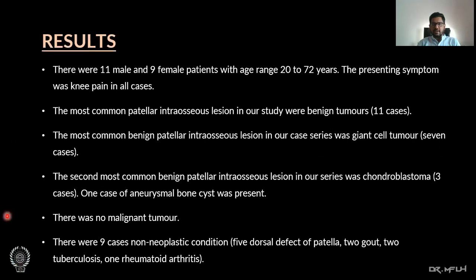There were 11 male and 9 female patients with an age range of 20 to 72 years. The presenting symptom was majorly knee pain. The most common patella intraosseous lesions in this study were benign tumours, accounting for 11 cases. The most common benign patella intraosseous lesion was Giant Cell Tumour in 7 cases, and the second most common was chondroblastoma in 3 cases. One case of aneurysmal bone cyst was also present.